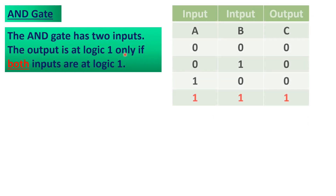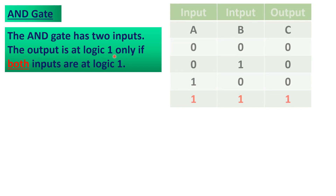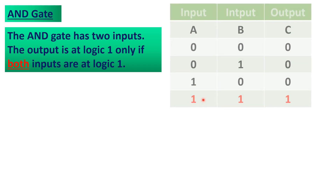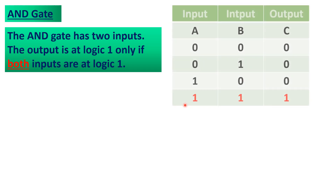The second basic logic gate is called an AND gate. The AND gate has two inputs labeled input A and input B. The output is at logic 1 only if both inputs are at logic 1. According to the truth table for the AND gate, the output will be high voltage if and only if both input A and input B are high voltages, or if both inputs A and B are at logic 1.